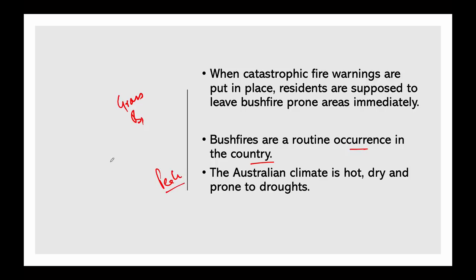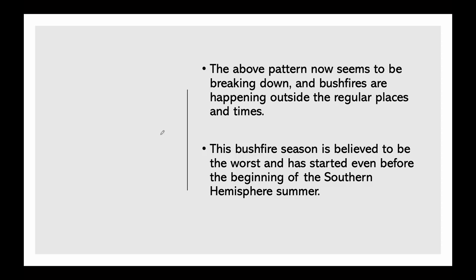This time around November and December, but this year there is something different and distinct about the present bushfire season. The above pattern of the bushfires seems to be breaking down — they typically spread during spring and early summer around November and December, but this year bushfires are happening outside the regular places and times. This bushfire season is believed to be the worst and had started even before the beginning of the Southern Hemisphere summer.